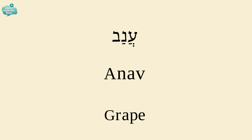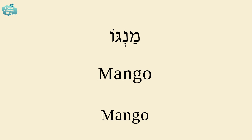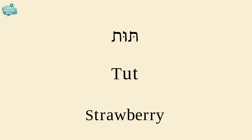A grape is ANAV. And grapes are ANAVIM. The name for mango is MANGO — just like in English. A strawberry is TUT.